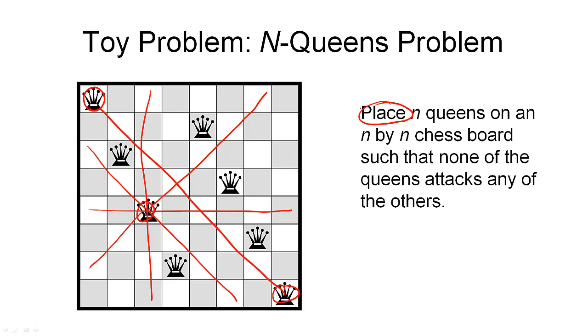So the initial state is the empty chess board. The actions we have available are placing queens onto the board. And a goal state is any state where the queens don't attack each other. Again, we can assume a unit cost for the actions, so all actions are equally expensive.